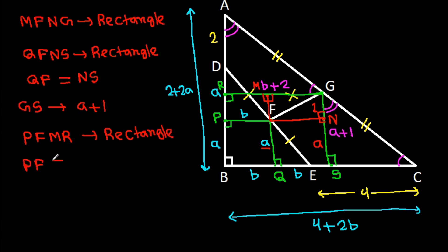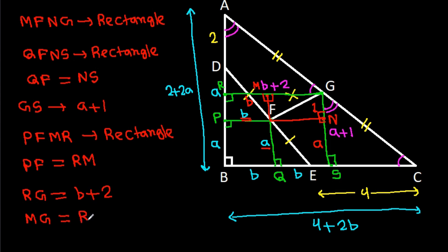And we have GS is A plus 1, so GN will be 1. Again, PFMR will be a rectangle, so PF will be equal to RM. And PF is B, so RM will be B. And RG is B plus 2, so MG equals RG minus RM, that is B plus 2 minus B, which equals 2. So MG is 2.